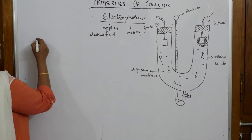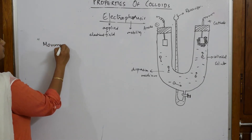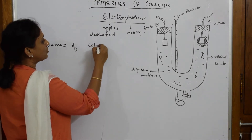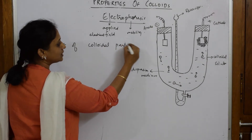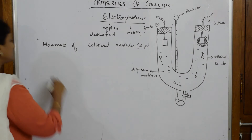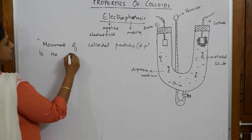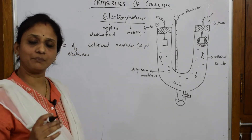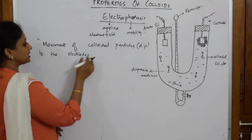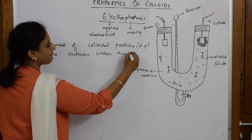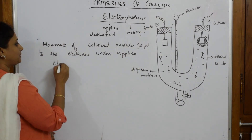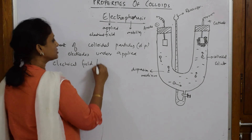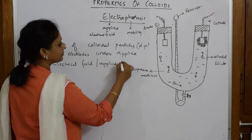So let's define electrophoresis: it is the movement of colloidal particles — that is, the dispersed phase — towards the electrodes under an applied EMF or under an applied electrical field.